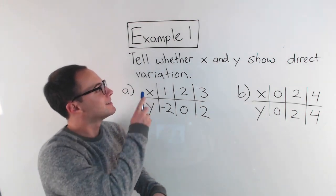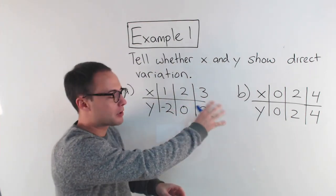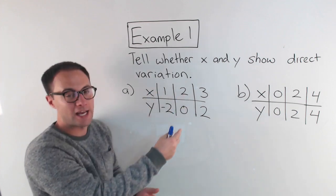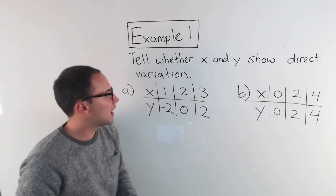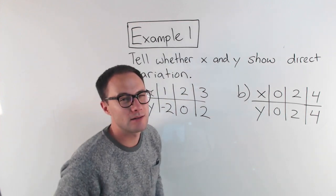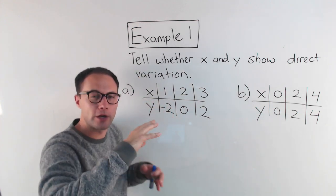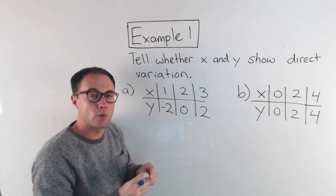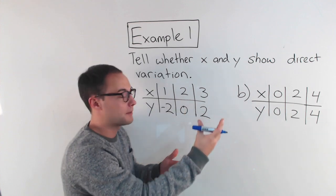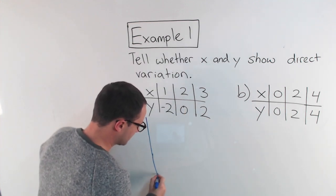Example 1, tell whether x and y show direct variation. So we have two problems we're going to do. First one, we've got a table x and y. We've got some x values. We've got some y values. Notice there's no equation. So we're not going to do it that way to see if we can write the equation with y equals kx. Instead, what we're going to do is we are going to graph them.